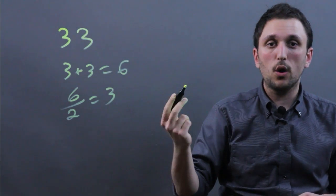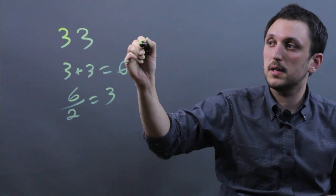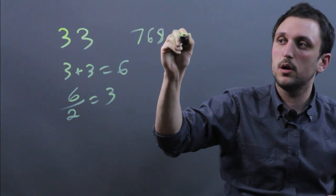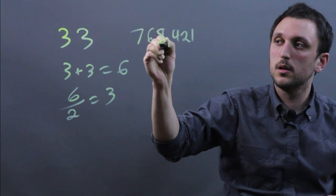Now we can take a much larger number than that and still figure it out. Let's take the number 768,421. That's an 8.